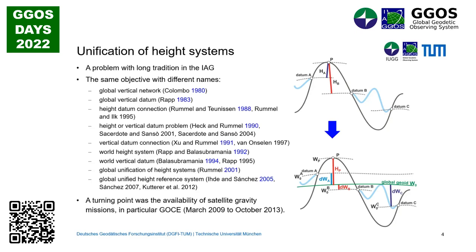We could get a real turning point to solve this problem, and this was the availability of the satellite gravity missions, in particular GOCE. GOCE worked from 2009 to 2013, and based on the data captured, we were able to determine a global reference surface. The resolution is about 100 kilometers, but it is a unified reference level for the complete world. What we need to do now is to refine this resolution by combining this data with terrestrial gravity data.